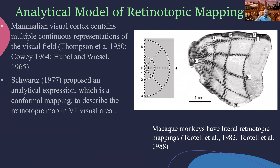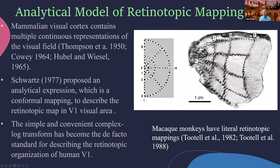Back in 1977, Professor Schwartz proposed the log transform formulation, indicating that all conformal matching between the visual field and the cortical surface should be a conformal mapping. Based on this hypothesis, many excellent works were done using this simple and elegant complex log transform — which is a conformal function — giving us a much better understanding of the human brain and retinotopic matching.